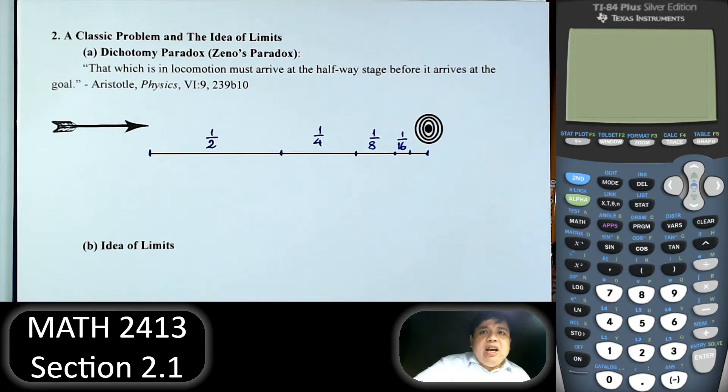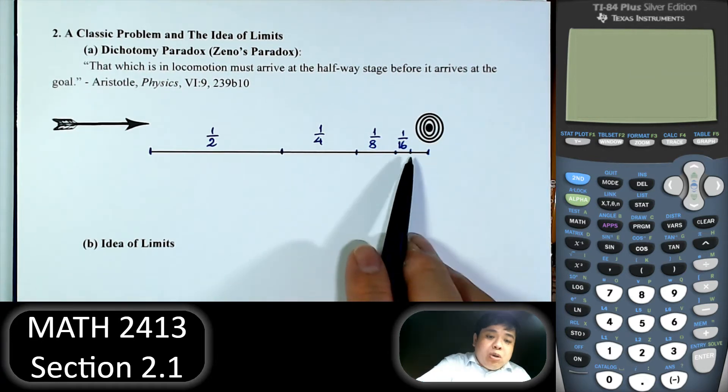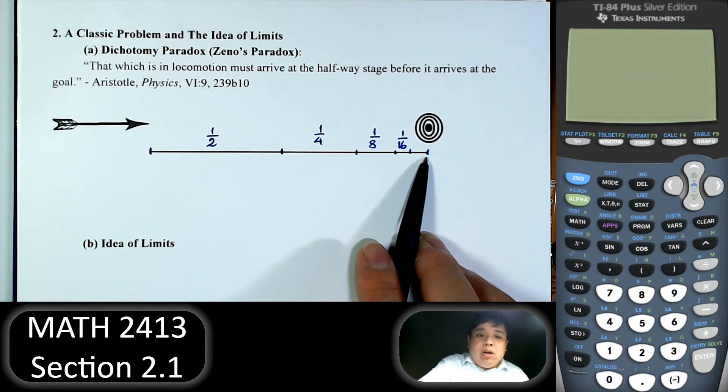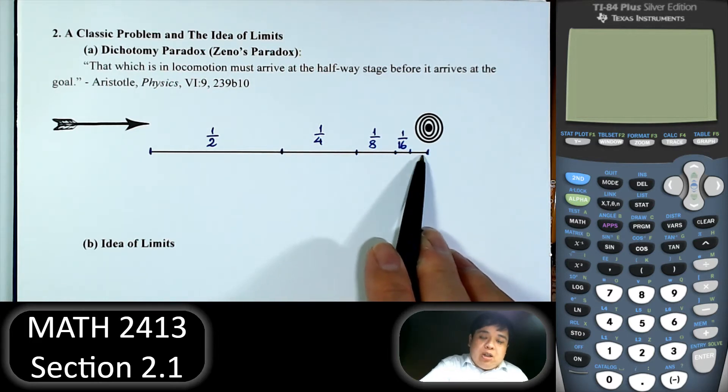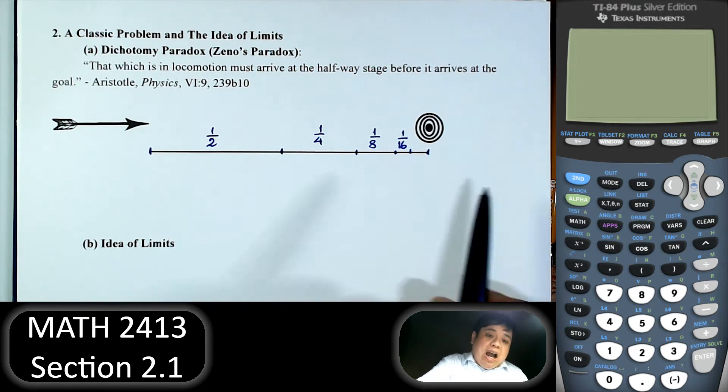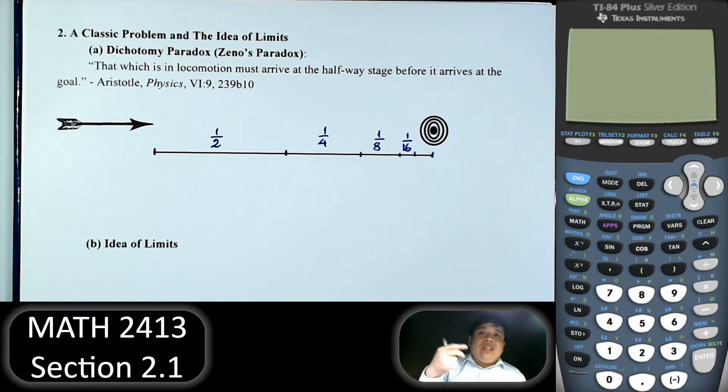So the idea here is it doesn't matter how close this point is to the final point, we can always get closer. Doesn't matter this point, how close it is to the final point, it can always get closer. It doesn't matter how small the distance is, we can always divide that by 2.